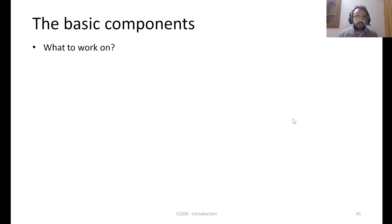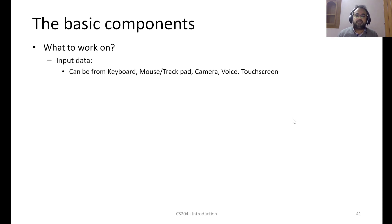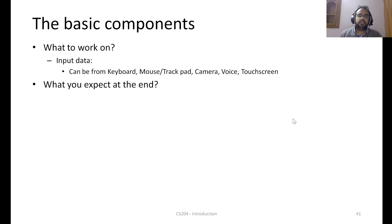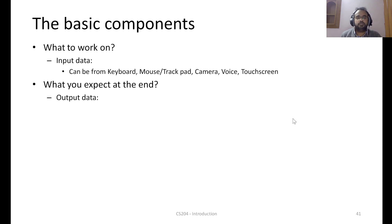The very first group is input — how is the input given. The input data can be from a standard keyboard, mouse, trackpad, voice, camera, or touch screen. Each product can have a specific set of inputs. Following that, what do we expect the system to do at the end of some basic processing? That is the output data — typically a graphical display, LCD, CRT monitor, printer, or projector.